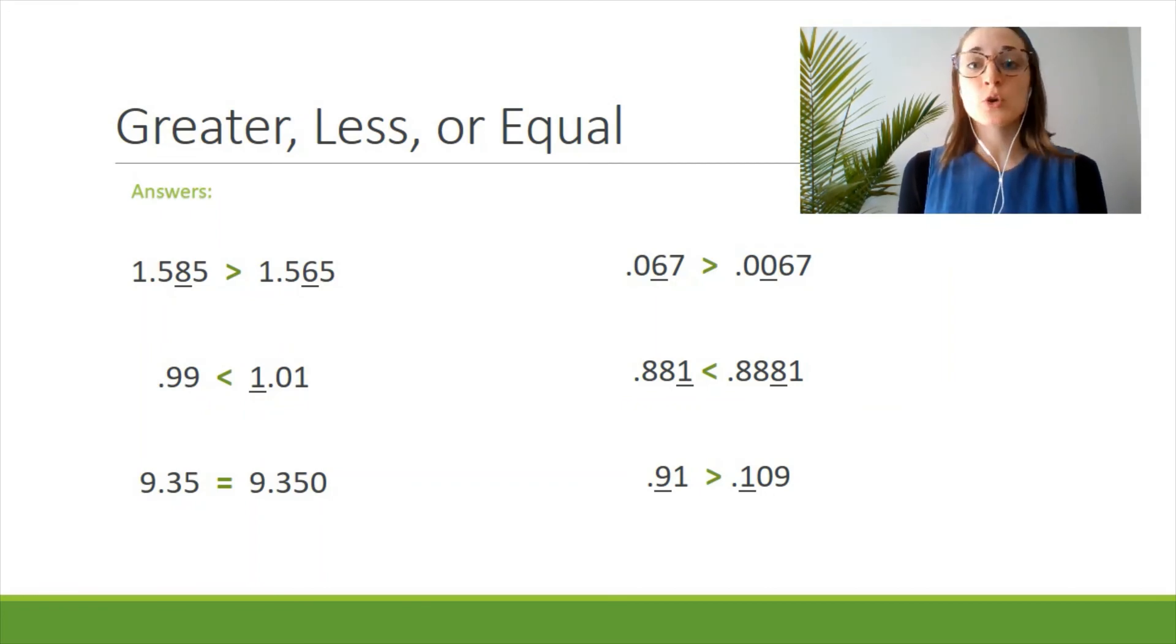0.067 is greater than 0.0067 because there is a six versus a zero in the hundredths place. 0.881 is less than 0.8881 because in the thousandths place, the first number has a one and the second has an eight. Finally, 0.91 is greater than 0.109 because nine is greater than one. Always look for the numbers closest to the decimal point and compare down the line from there.